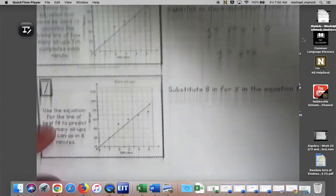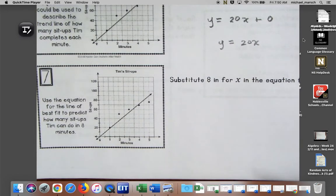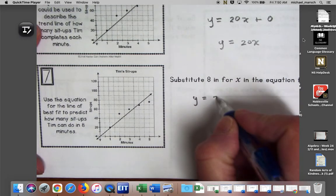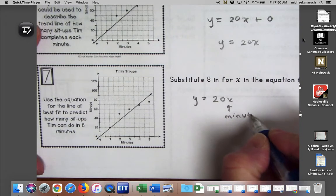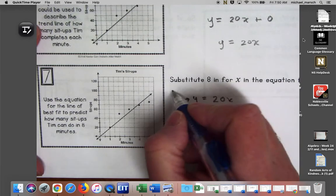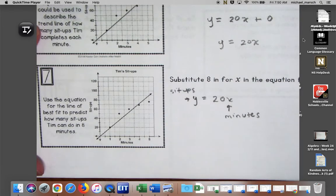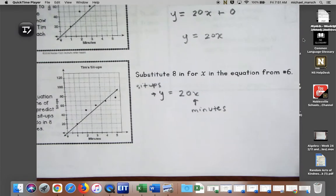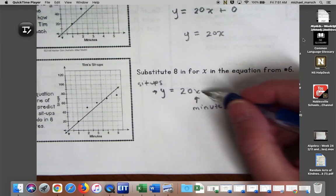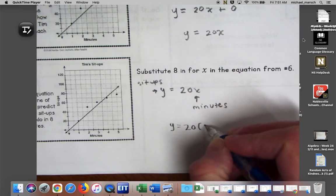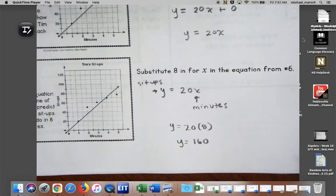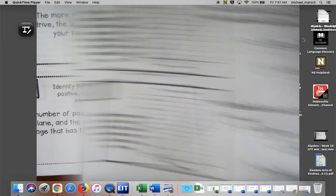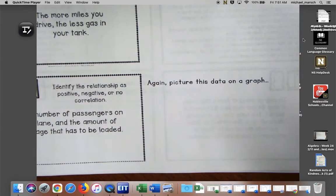Number seven says use the equation, the line of best fit, to predict how many sit-ups he can do in eight minutes. Let's write out our equation: y equals 20x. We know that x is the minutes because that's the title of my x-axis, and y is the sit-ups. If I'm going to put eight in here for x, so y equals 20 times 8, so y equals 160 sit-ups. Yikes, who wants to do that?